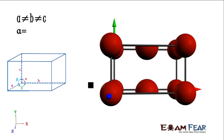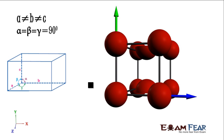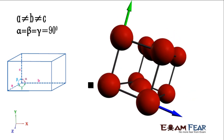The next is the base centered orthorhombic, where atoms are there in the corners plus on one of the two opposite sides — for example on these two sides, though it can be any other pair also. All the sides are unequal and all the angles are 90 degrees. This is how a base centered looks.